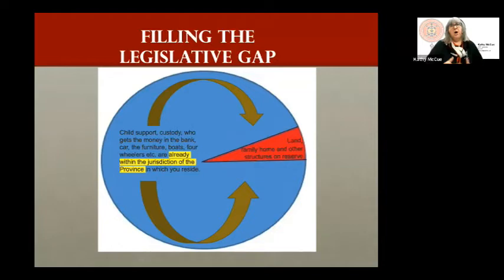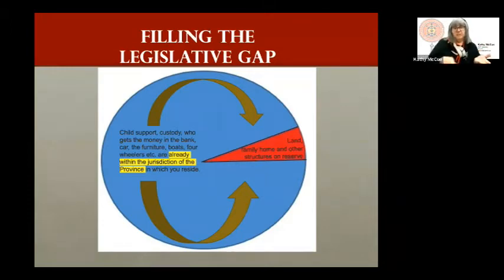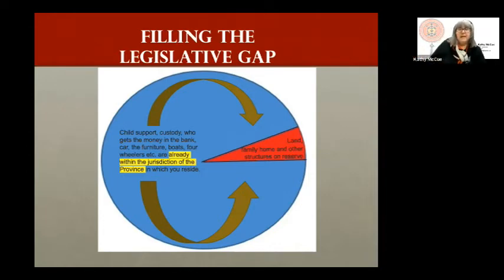If you find yourself in a court dealing with both issues, the judge will have the provincial family law regime in one hand to deal with all the blue issues. When it comes to land and the family home and structures on reserve, they'll either have a copy of the provisional federal rules if you don't have your own law yet, or they'll need a copy of your matrimonial real property law to interpret how the land and family home are treated.